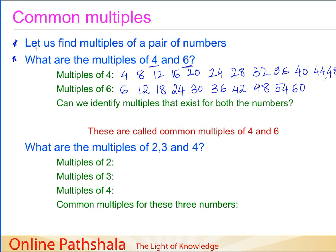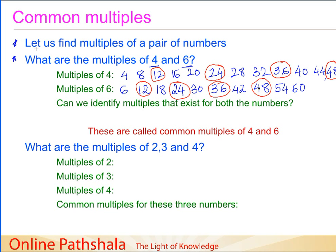Our goal is to find any multiple that exists for 4 as well as for 6, and if we find a common multiple we are going to encircle it. The number 12 is a multiple of 4 as well as a multiple of 6. Going ahead, 24 also exists as a multiple of both. We also find that 36 is a multiple of both 4 and 6, and the next common multiple is 48.